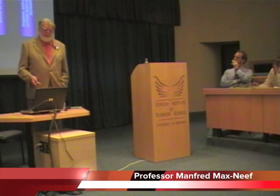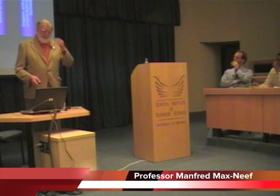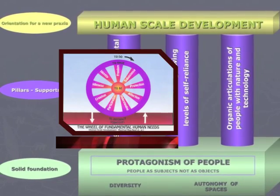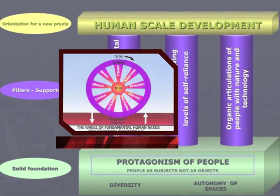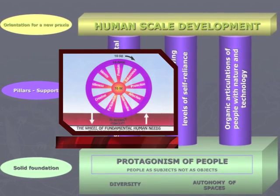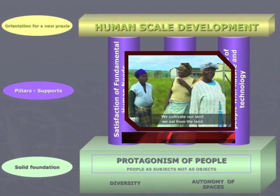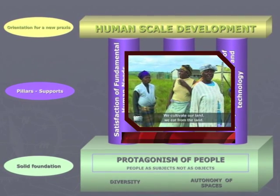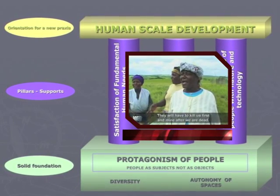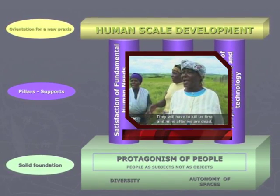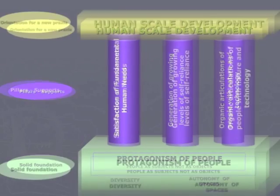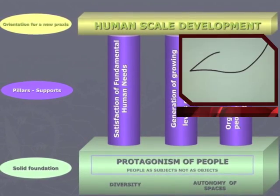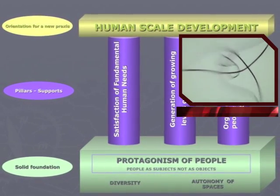Human-scale development is based on three fundamental pillars. First, the satisfaction of fundamental human needs, the generation of growing levels of self-reliance at local and national levels, and an organic articulation between people, nature and technology.